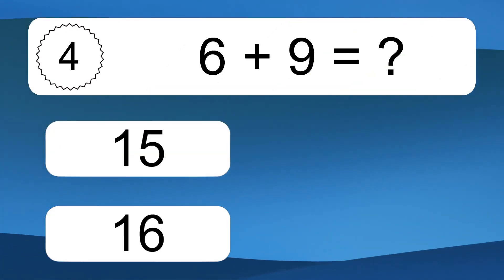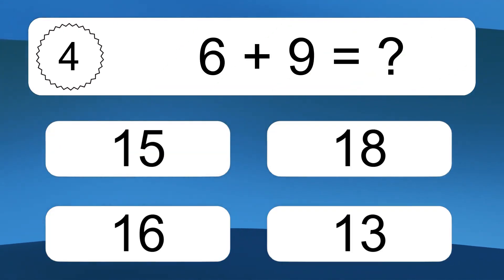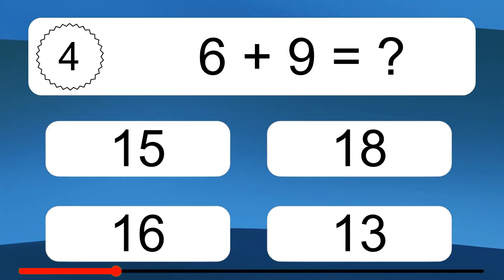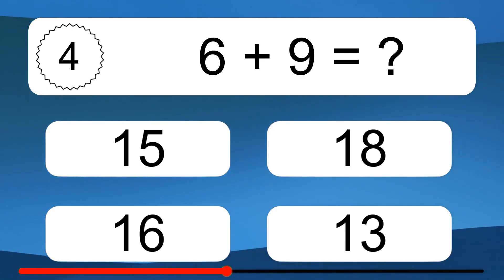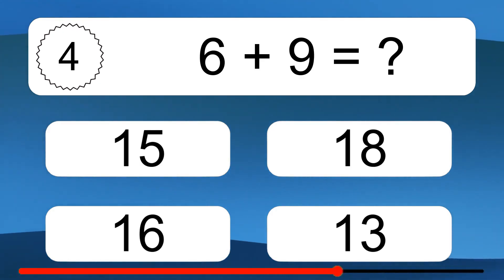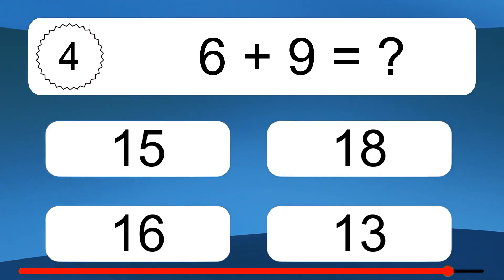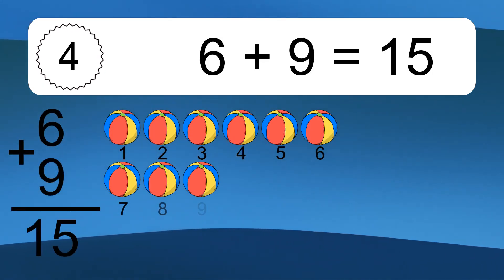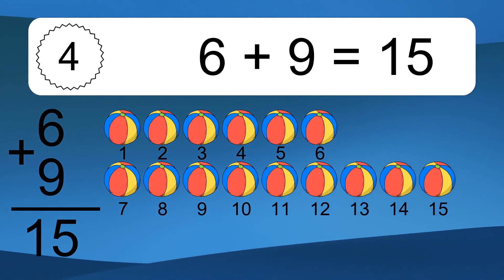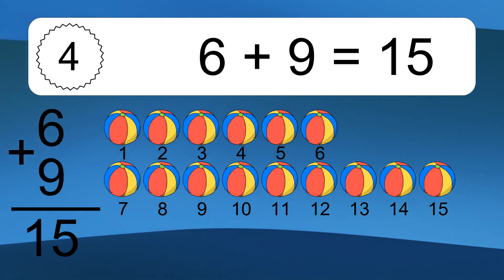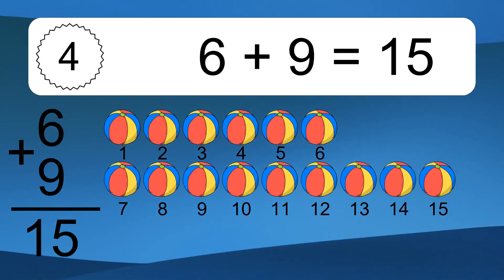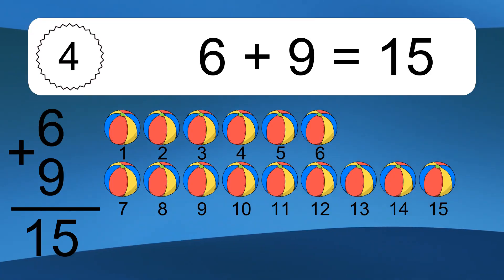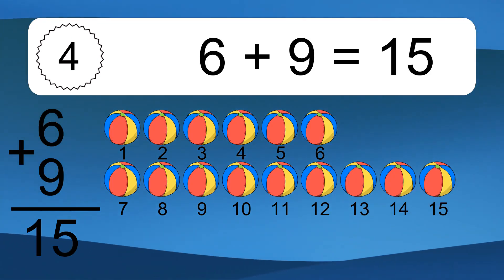6 plus 9 equals what? 6 plus 9 equals 15. Let's count it: 1, 2, 3, 4, 5, 6, 7, 8, 9, 10, 11, 12, 13, 14, 15.